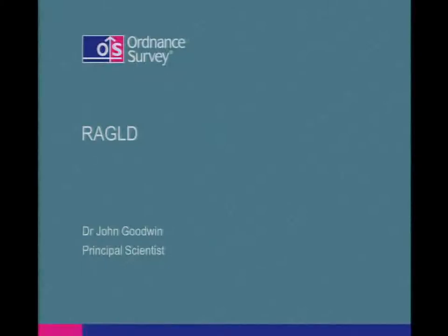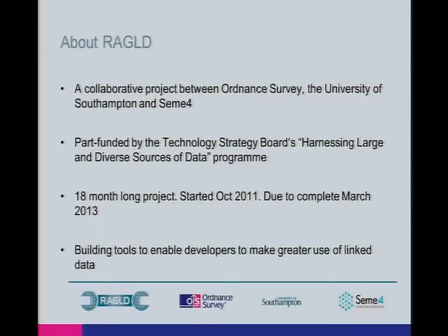I'm going to talk about a project called RAGLD. Like all of these projects it has a silly acronym — RAGLD stands for the Rapid Assembly of Geo-Centered Link Data Applications. RAGLD was a collaborative project between Ordnance Survey's Research Department, the University of Southampton, and a small company called Semaphore. It was part-funded by the Technology Strategy Board as part of their Harnessing Large Data Sets funding call.